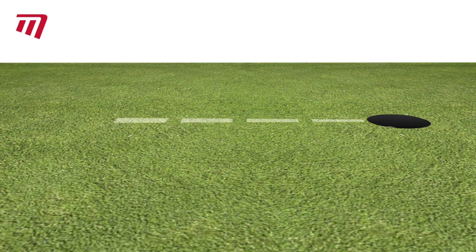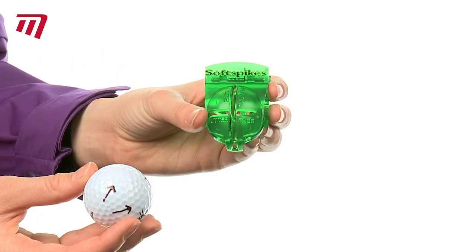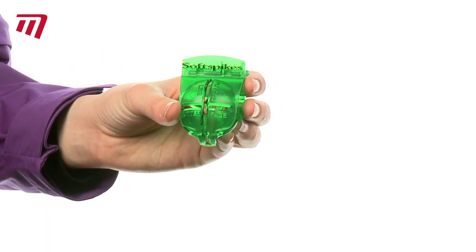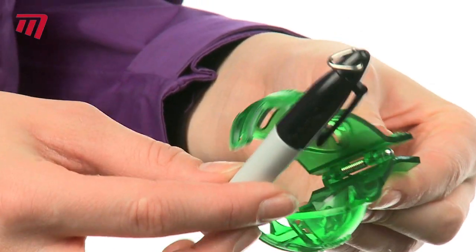This is the only ball alignment tool that marks both sides of the ball. And it even comes with a free Sharpie pen and Pride Offset tee.